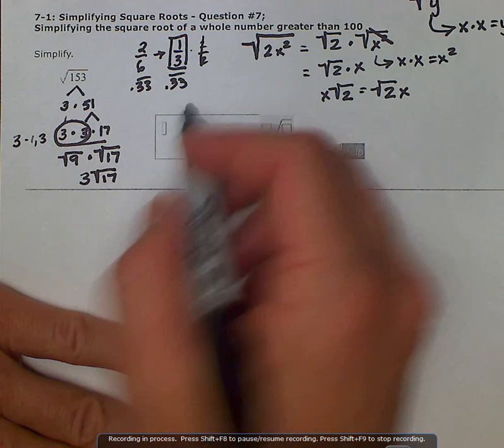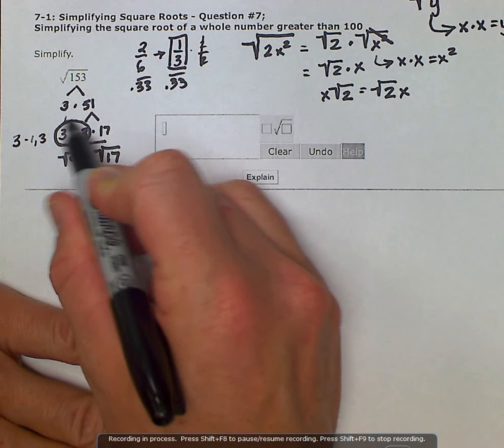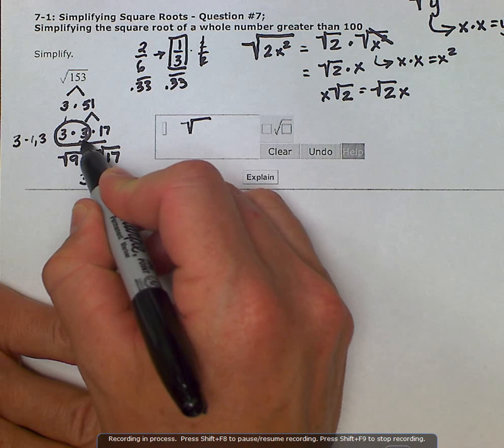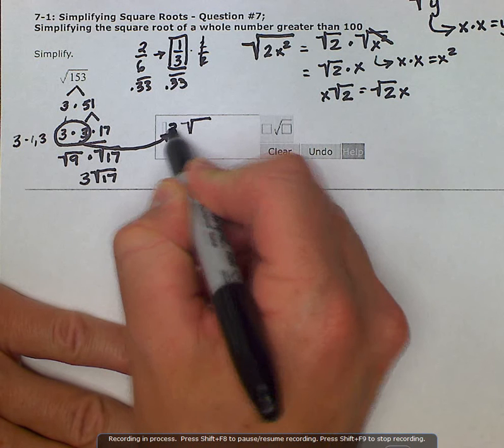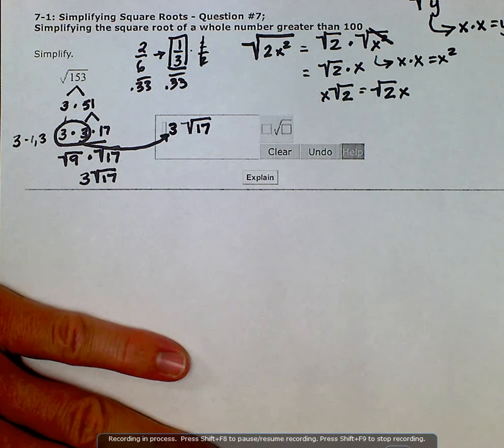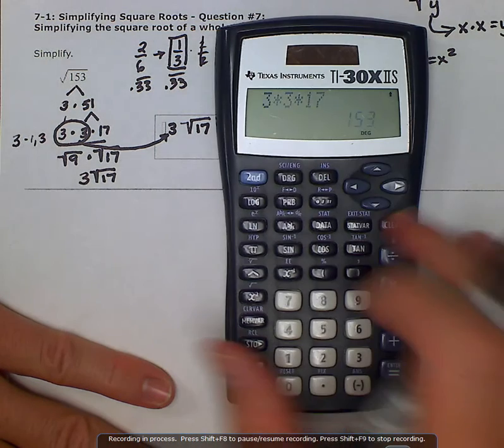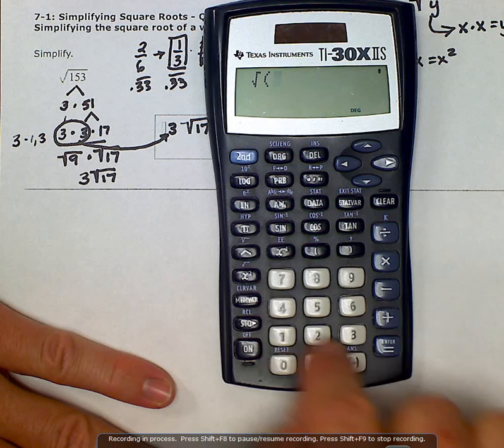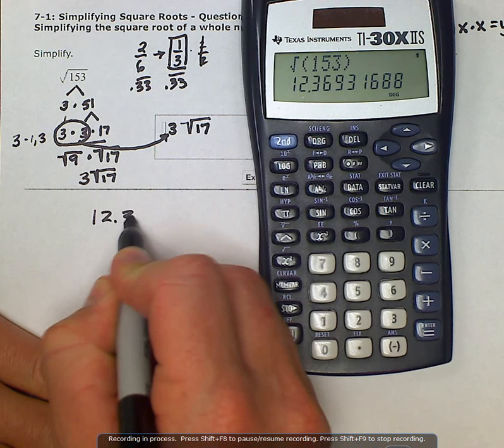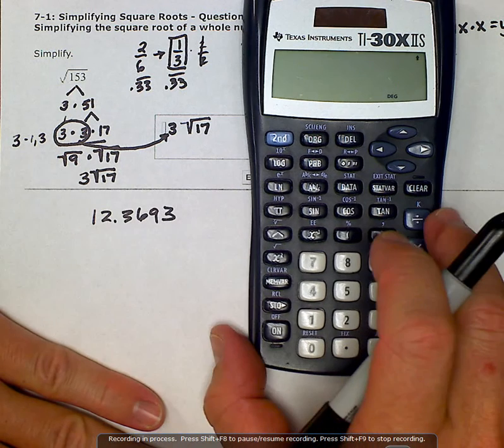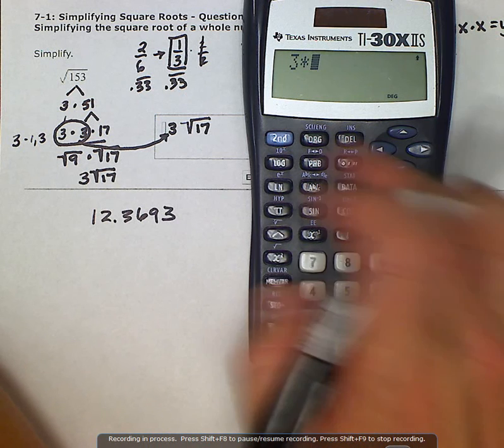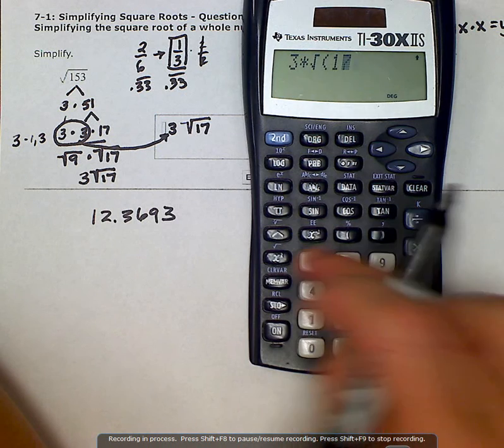And the other way we can think about it is anytime you have a couplet here, one of those numbers comes to the outside of the radical. So this couple here, the 3 comes to the outside, and anything left over that is not in a couplet is left under the radical. And there is our simplified expression. And we can verify that on the calculator by first finding out what is the square root of 153. It's approximately 12.3693. And then we can verify that we've simplified it in this expression here is the same value by saying 3 times the square root of 17 should equal the same number.